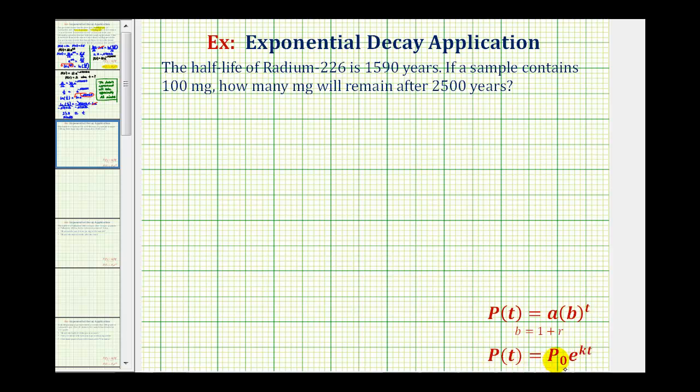In this exponential function here, p of t is the amount after time t, p sub zero is the initial amount, and k is the continuous exponential decay rate, and t is time.